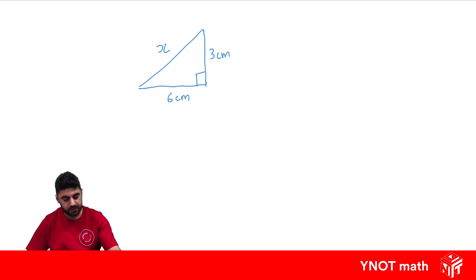Well, with Pythagoras' theorem, we know that the hypotenuse squared equals the other two sides squared and added together. So x squared is going to equal 3 squared, which means 3 times 3, which is 9.